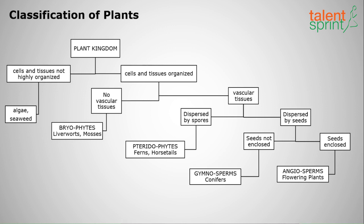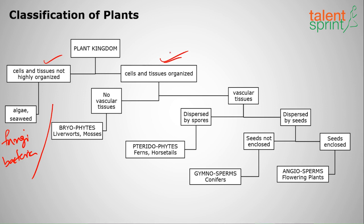The plant kingdom is classified into two types: cells and tissues that are not highly organized, and cells and tissues that are highly organized. Algae, fungi, and bacteria fall under the not highly organized group.